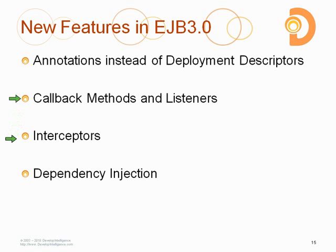The second major feature was interceptors. Aspect-oriented programming was becoming popular during EJB 3.0 development, so instead of including a logging call in every single EJB method, you could create a logging aspect — an interceptor — and apply it to your bean. This allowed developers to refactor common utility code out of their EJBs so they could truly focus on the business logic required to make the bean work.